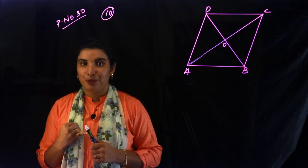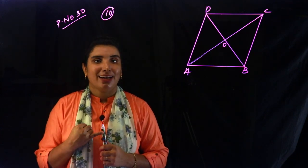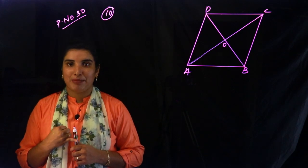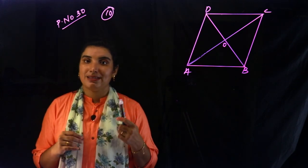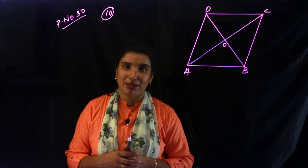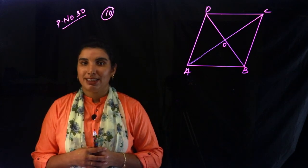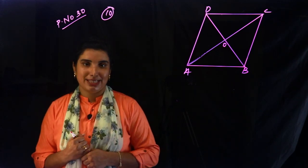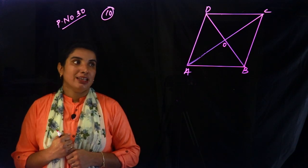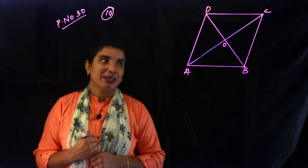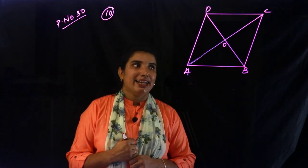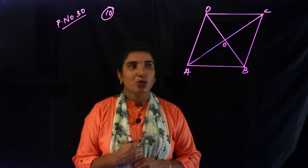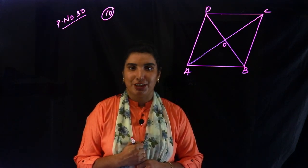First, we are going to find the opposite sides equal — that is the parallelogram. Given: all sides are equal. To prove: the two diagonals are perpendicular bisectors of each other.